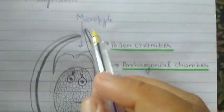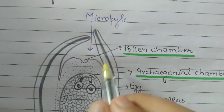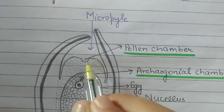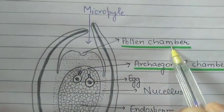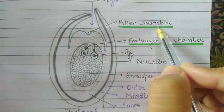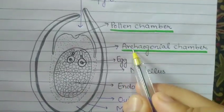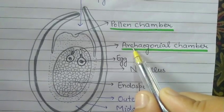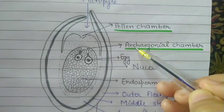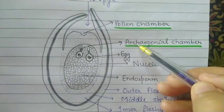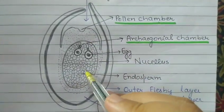The nucellus is at the micropylar end. At this micropylar end, the nucellus forms a funnel-shaped cavity which is called the pollen chamber. There are two cavities in the whole ovule: the first one is the pollen chamber, which is formed by the nucellus, and the second one is the archegonial chamber, formed by the endosperm. Remember, the pollen chamber is formed by the nucellus and the archegonial chamber is formed by the endosperm.